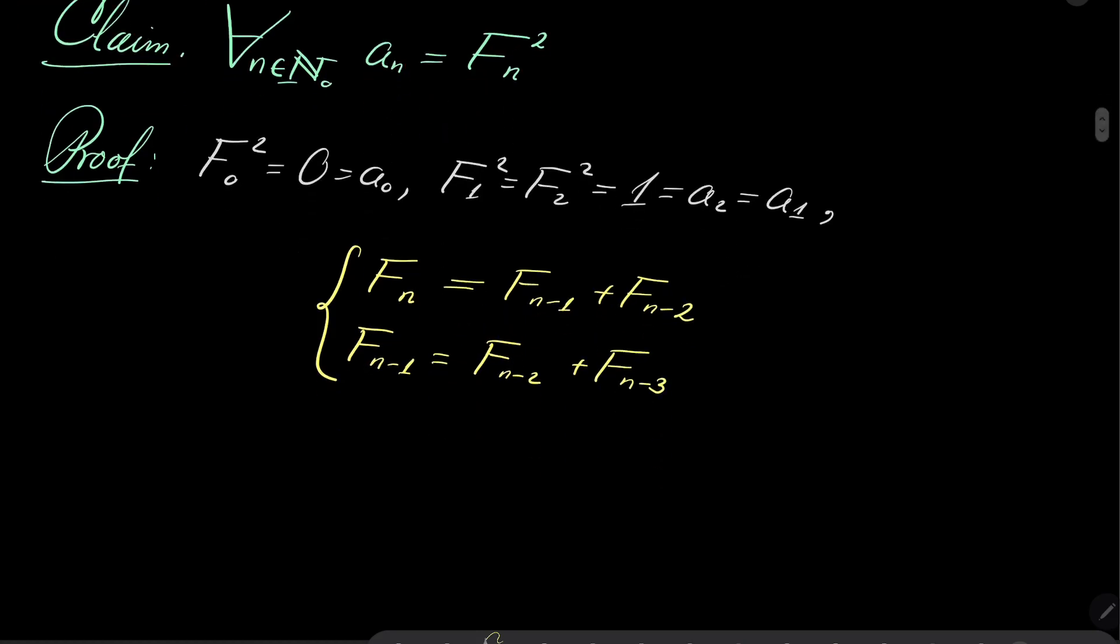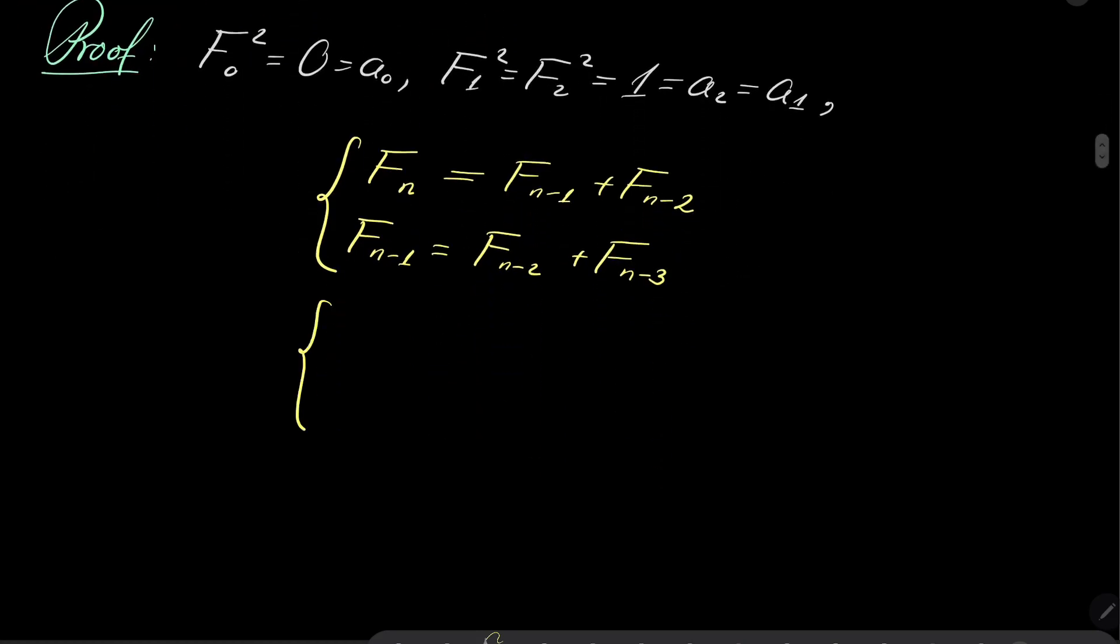All right. And now I will take these two equations and I will square them. So we have F_n squared equals F_{n-1} squared plus F_{n-2} squared plus 2F_{n-1}F_{n-2}. Here I will have F_{n-1} squared equals F_{n-2} squared plus F_{n-3} squared plus 2F_{n-2}F_{n-3}.